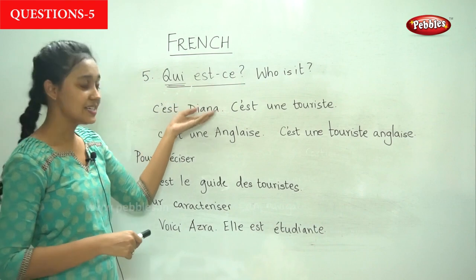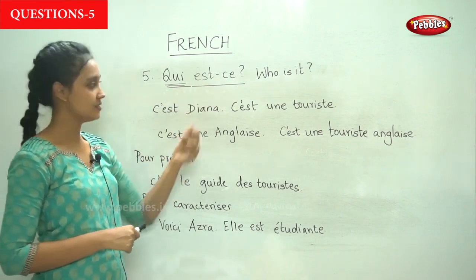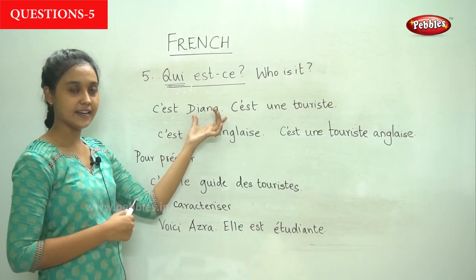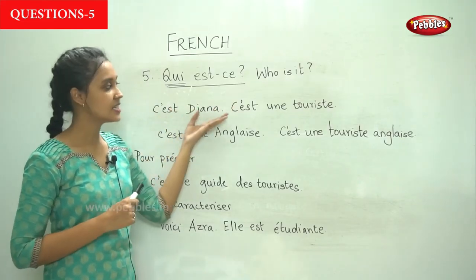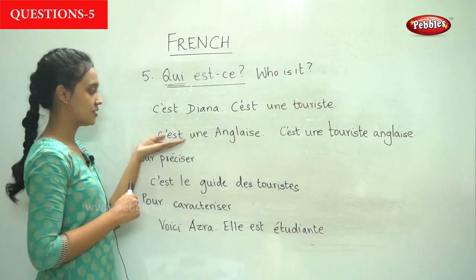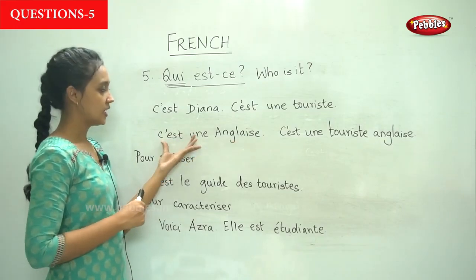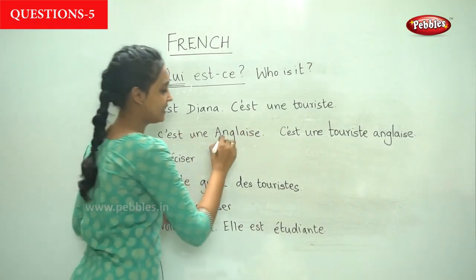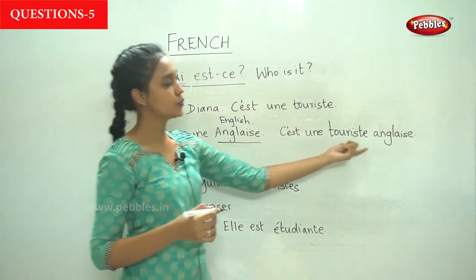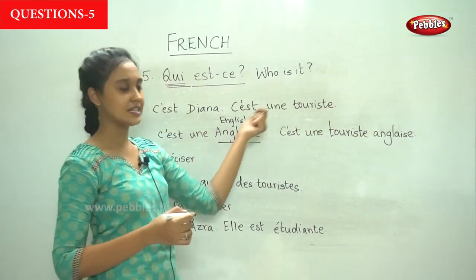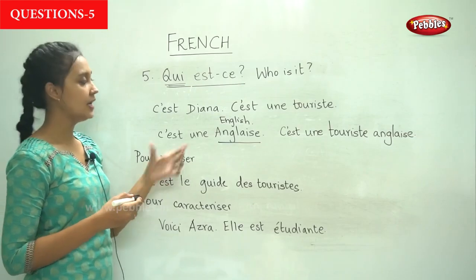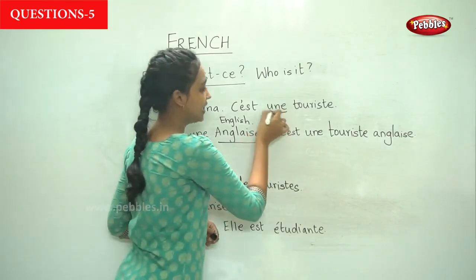Here are the different ways to answer 'Qui est-ce?' If it is referring to a person, you can say 'C'est Diana' — It is Diana. You can also say 'C'est une touriste' — She is a tourist. 'Anglais' is another nationality meaning English, from England. You can join these: 'C'est une touriste anglaise.' This is how we answer using the indefinite article.